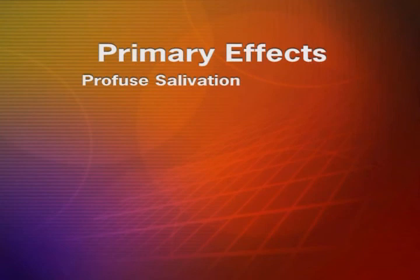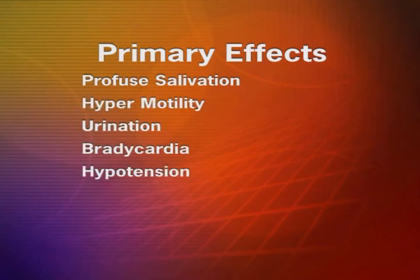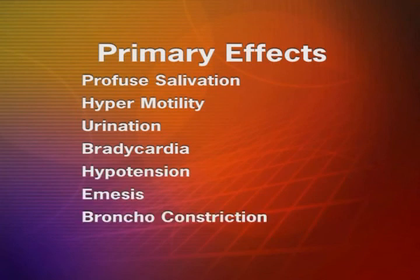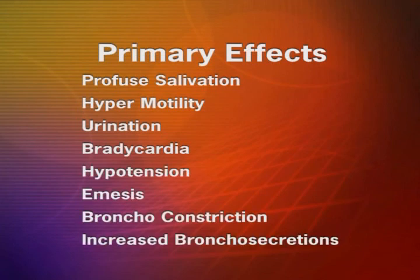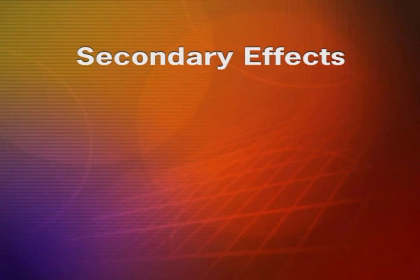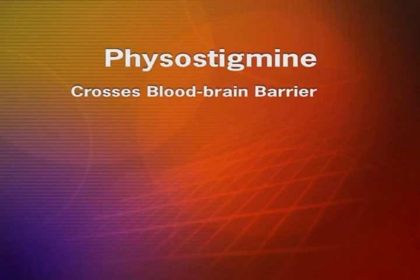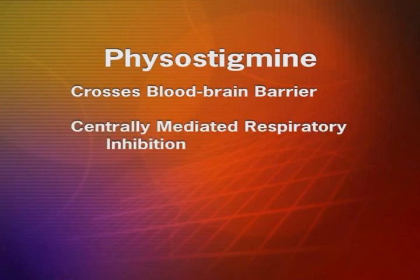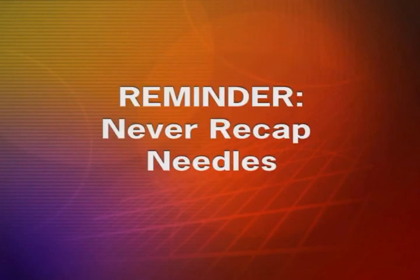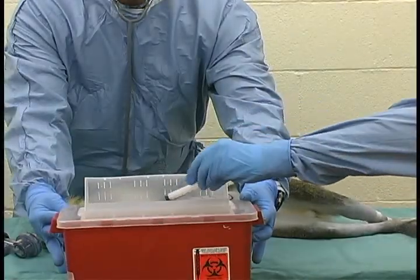Primary muscarinic effects include profuse salivation, hypermotility, urination, bradycardia, hypotension, miosis, bronchoconstriction, and increased bronchial secretions. Secondary effects are seen at the autonomic ganglia at the neuromuscular junctions or the nicotinic sites and include skeletal muscle fasciculations and paralysis. Physostigmine crosses the blood-brain barrier and causes centrally mediated respiratory inhibition and possible seizure activity. Please remember never to recap needles and dispose of them immediately into the sharps container provided.